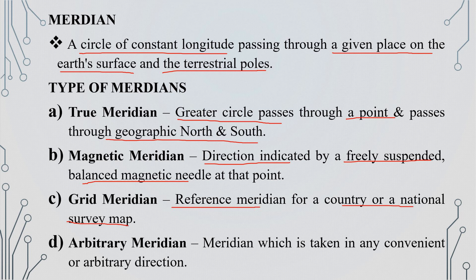The next one is Arbitrary Meridian. The arbitrary meridian is a meridian which is taken in any convenient or arbitrary direction. We call it arbitrary meridian.